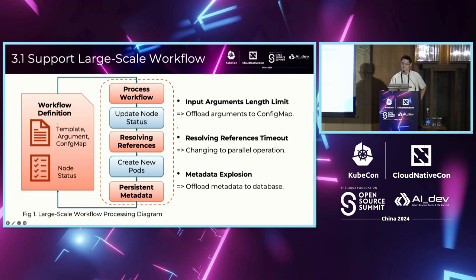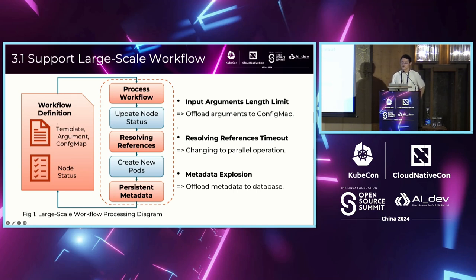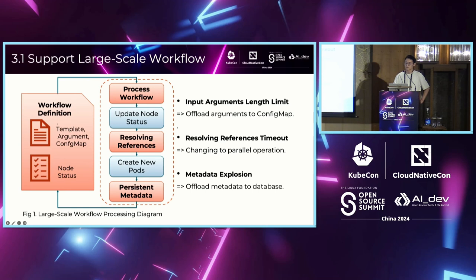After finding the root causes, we made the following optimizations. First, in the processing workflow stage, we check the parameter size of each task — if it exceeds 128 kilobytes, we offload it to a ConfigMap and read it back during running. Second, in the resolving references stage, we use parallel acceleration to render multi-template in one step. Third, in the persistence metadata stage, we offload parts of the node status to the database when node count exceeds 5,000, especially for test results and global outputs.